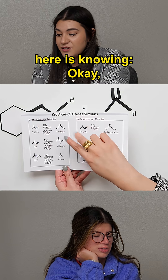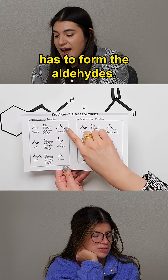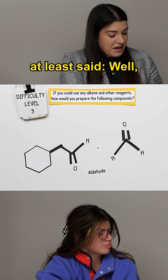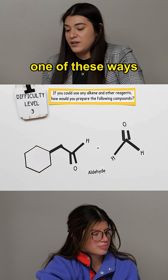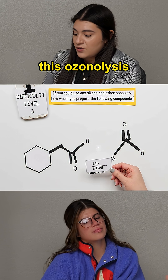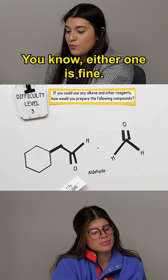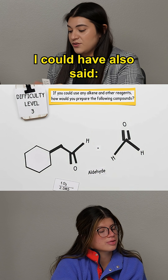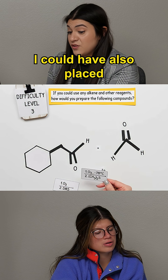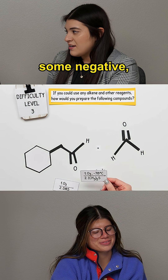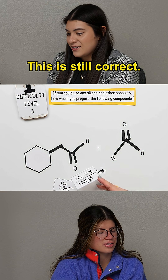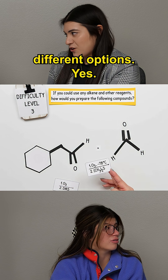The main thing here is knowing that at least one of these has to form the aldehydes. So I could have said one of these ways — I could have done this ozonolysis, or maybe this one; either one is fine. I could have also said this one would have worked, done the same thing. I could have also placed some negative degrees Celsius, and that could also give me the same thing. This is still correct. There are just several different options.